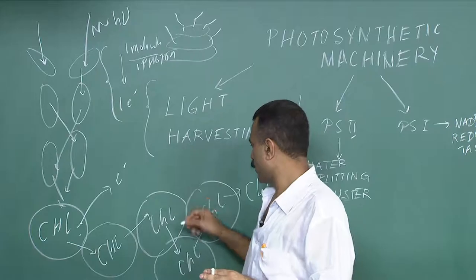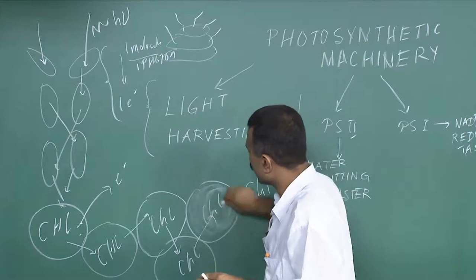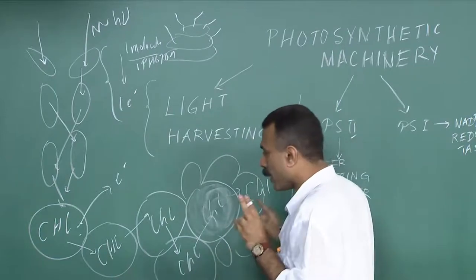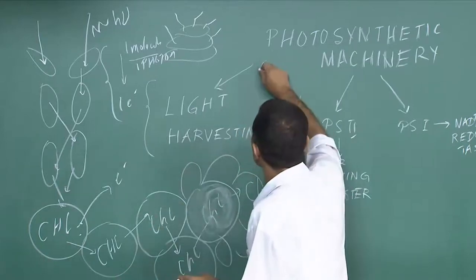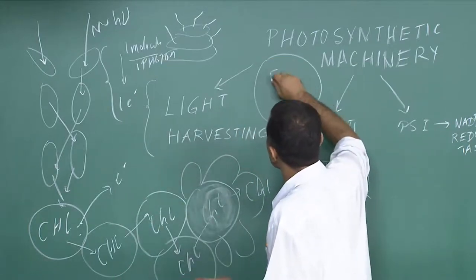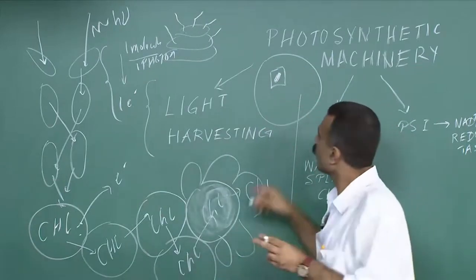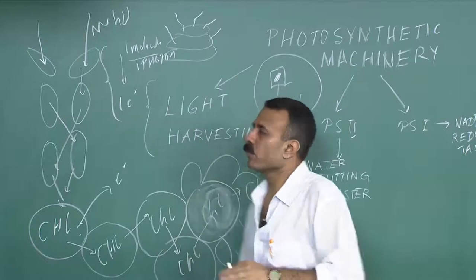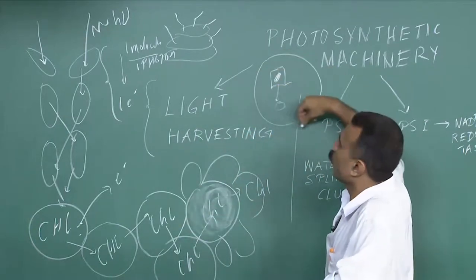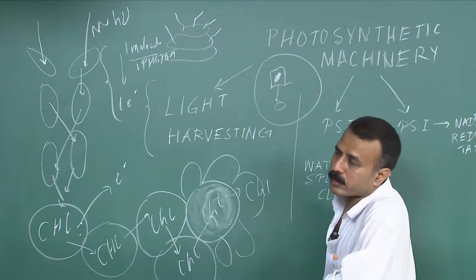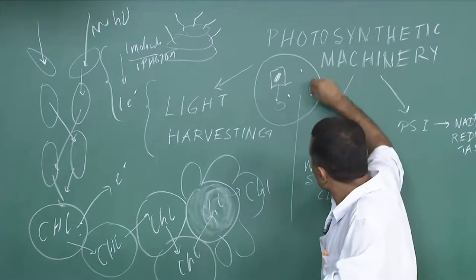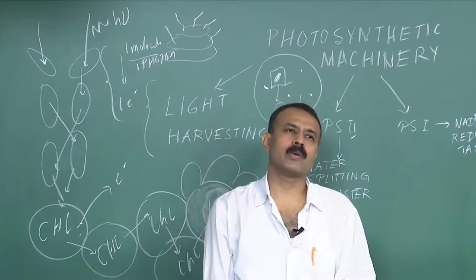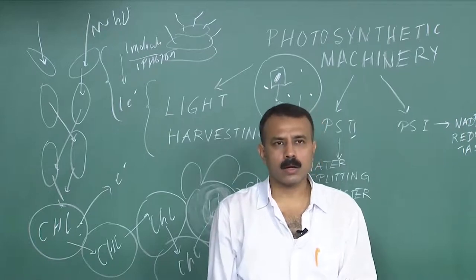There are specific reaction centers where the electron is ejected out, and that electron is accepted by a series of carriers. In a pool of chlorophyll, we do not know if the reaction center remains unique throughout the life of that particular cell or whether it changes. But we indeed know that if there are ten thousand or one million chlorophyll molecules present, not each one of them is a reaction center. There are specific moieties which are reaction centers, and nobody really knows what decides which one will become a reaction center — this is still a mind-boggling thing.